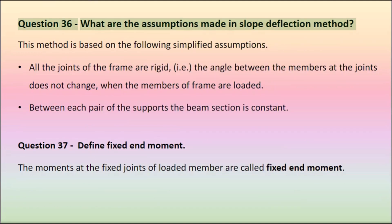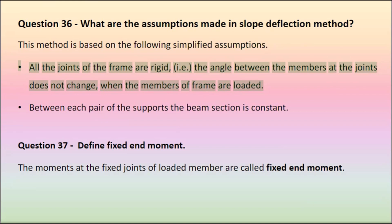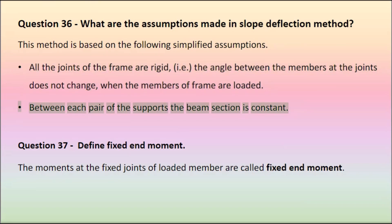Question 36: What are the assumptions made in slope deflection method? This method is based on the following simplified assumptions. All the joints of the frame are rigid — i.e., the angle between the members at the joints does not change when the members of the frame are loaded. Between each pair of supports the beam section is constant.